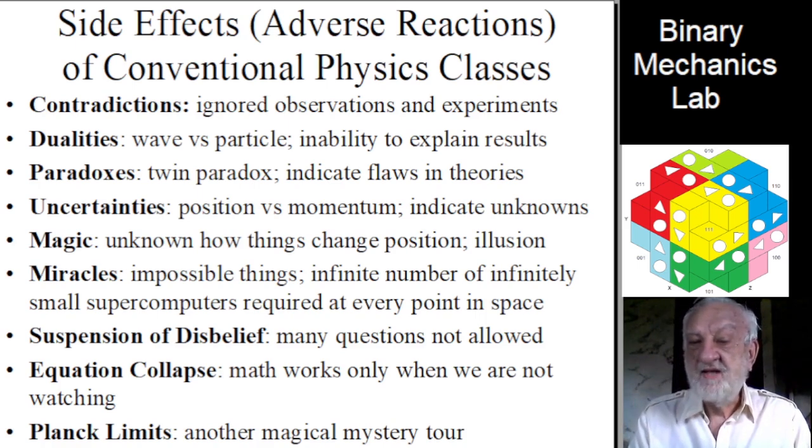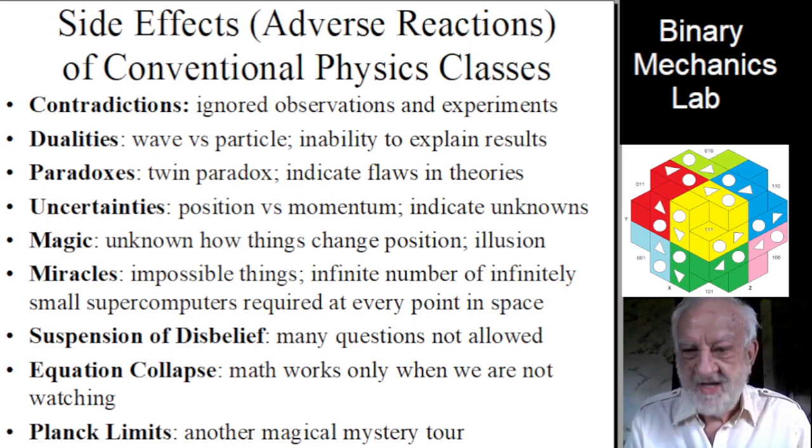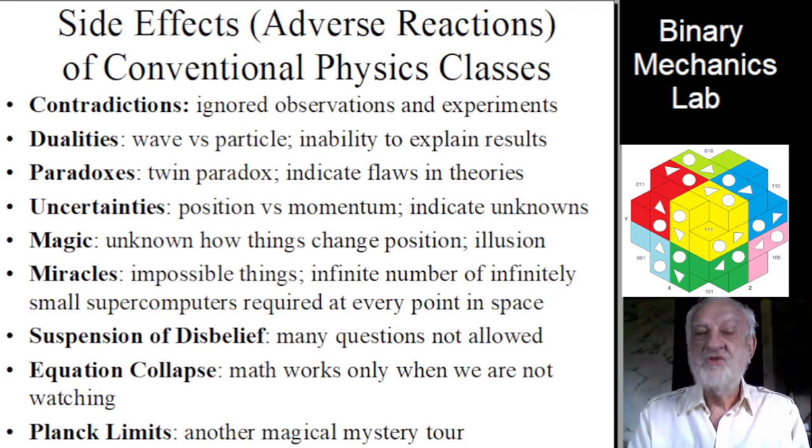Another side effect of continuous space-time theory is paradoxes, including the twin paradox in special relativity and Schrödinger's cat in quantum mechanics.